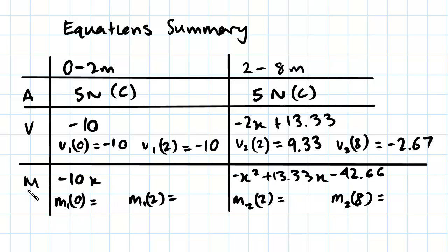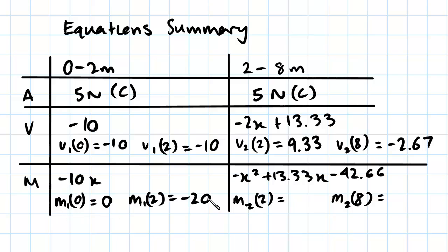Moving on to the moment equations, the moment equation for 0 to 2 meters is minus 10x. Substituting in 0 and 2 respectively, we get 0 at the start and minus 20 at the end of this span. Likewise, the equation for the 2 to 8 meter span...